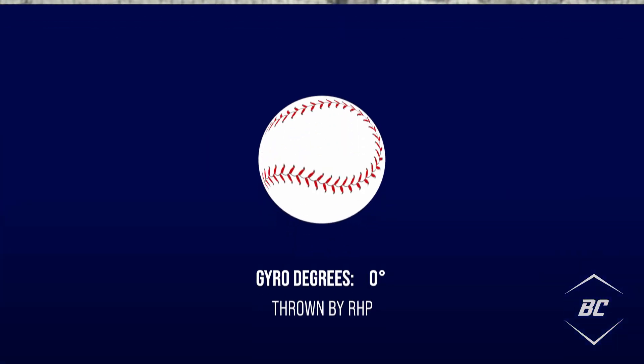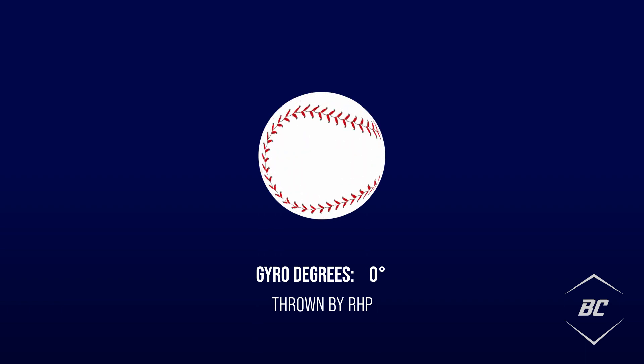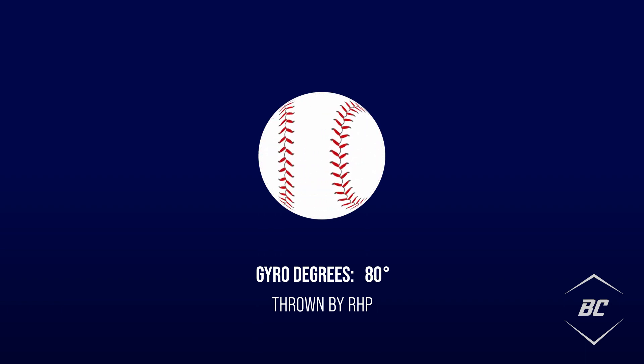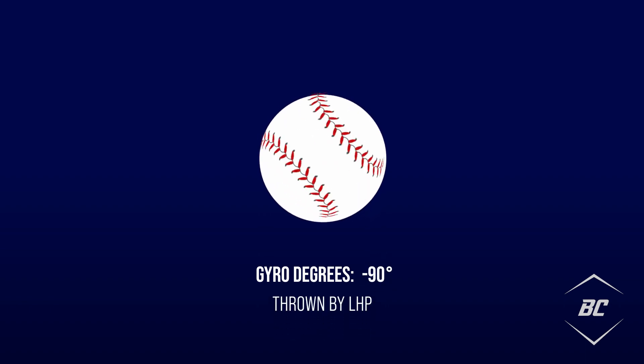Gyro degree is directly measured by a Rapsodo pitching unit and is measured in degrees. Righty and lefty pitchers are measured differently, with righty gyro degrees being measured from 0 to 90 while lefties are measured from 0 to negative 90. Lefties are measured with negative values because the same amount of gyro spin thrown by a righty will be mirrored by a lefty — a righty throwing a pitch with positive 20 degrees would be comparable to negative 20 for a lefty.